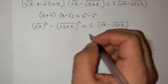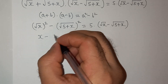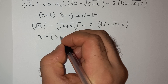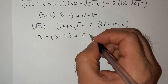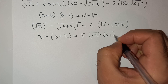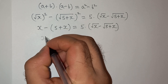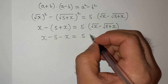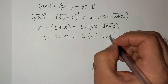So we can write this as: root(x)² - root(5 + x)² = 5 × (root(x) - root(5 + x)). This root(x)² will be x, and root(5 + x)² will be (5 + x), so we have x - (5 + x) = 5 × (root(x) - root(5 + x)).